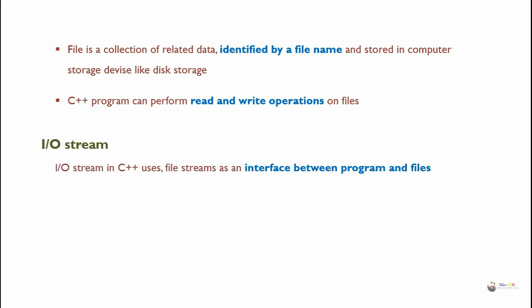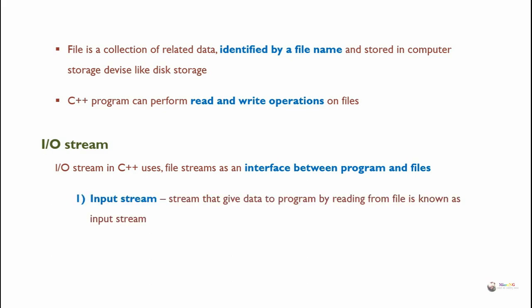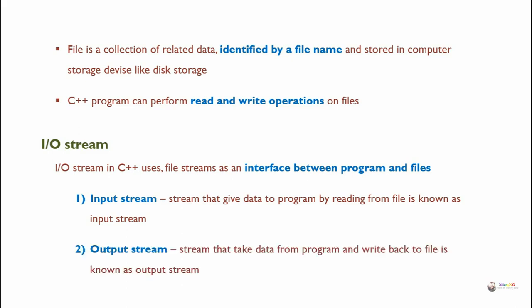C++ uses file streams as an interface between the program and files via iostream. A stream that gives data to a program by reading from a file is known as an inputStream. A stream that takes data from a program and writes it back to a file is known as an outputStream.